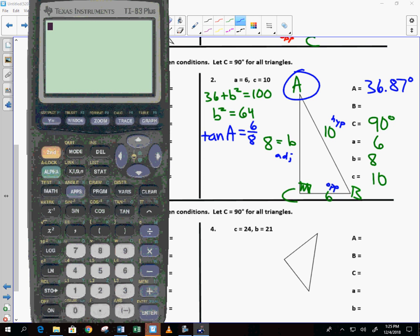All of the angles have to add to 180. I have 180 minus 90 minus 36.87. And I get 53.13.